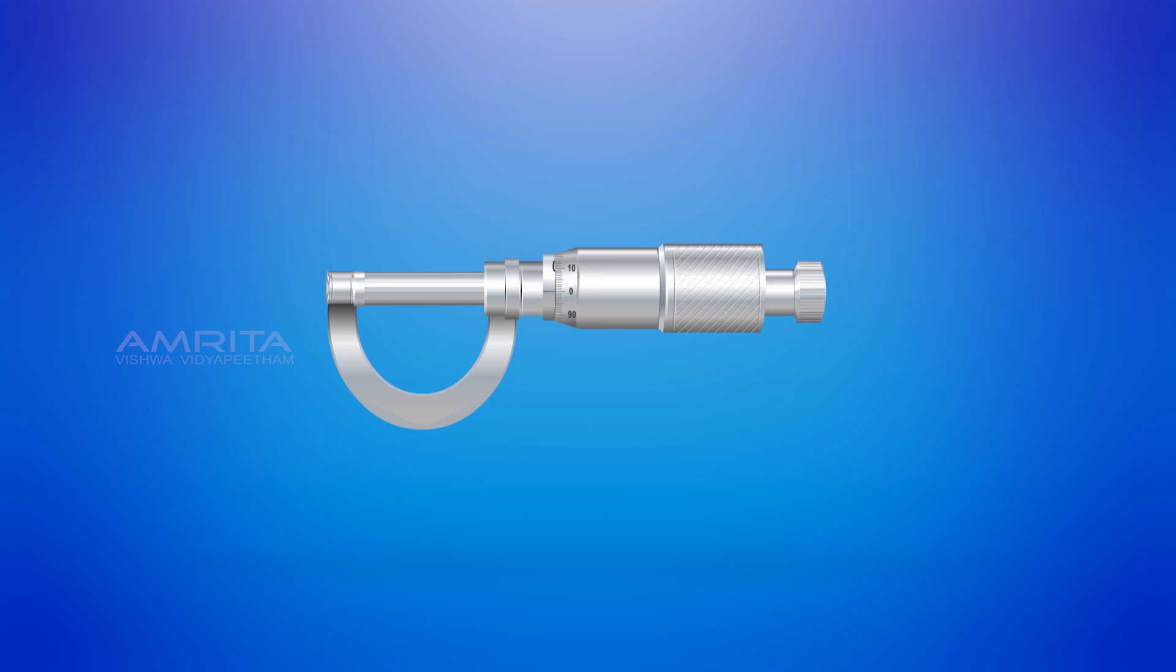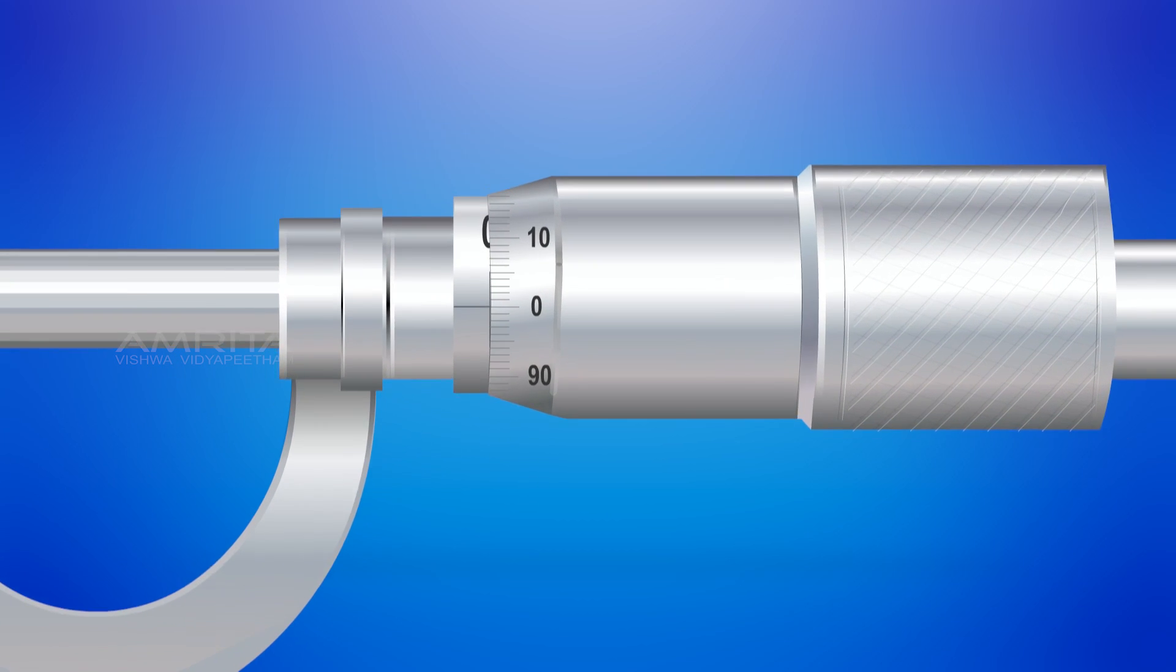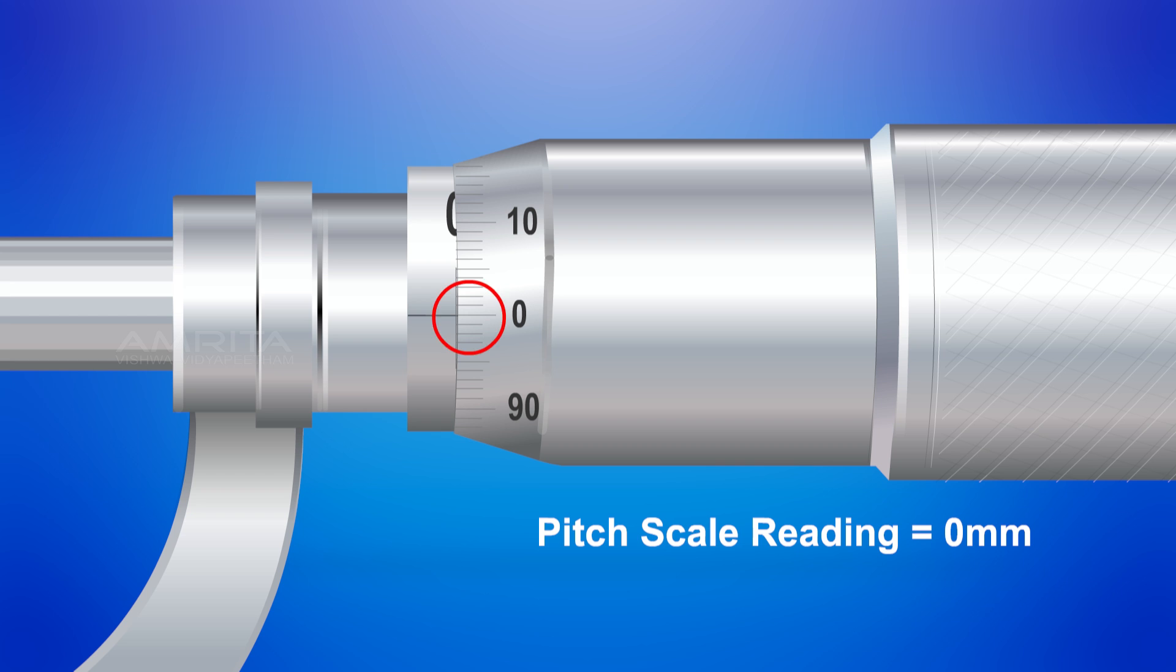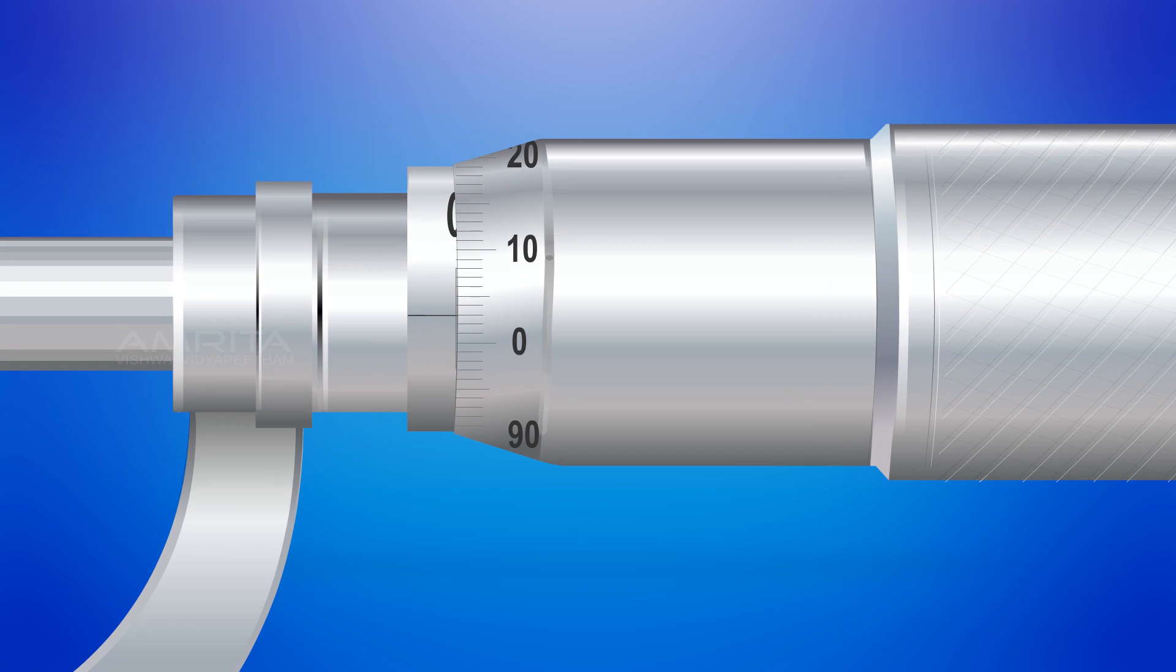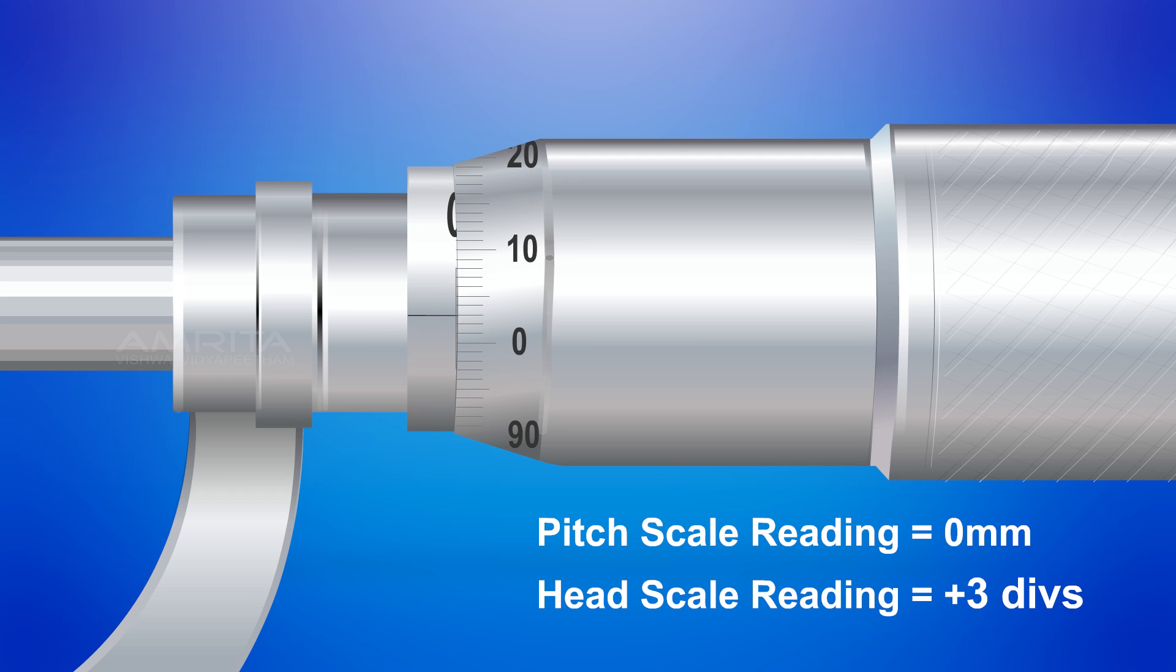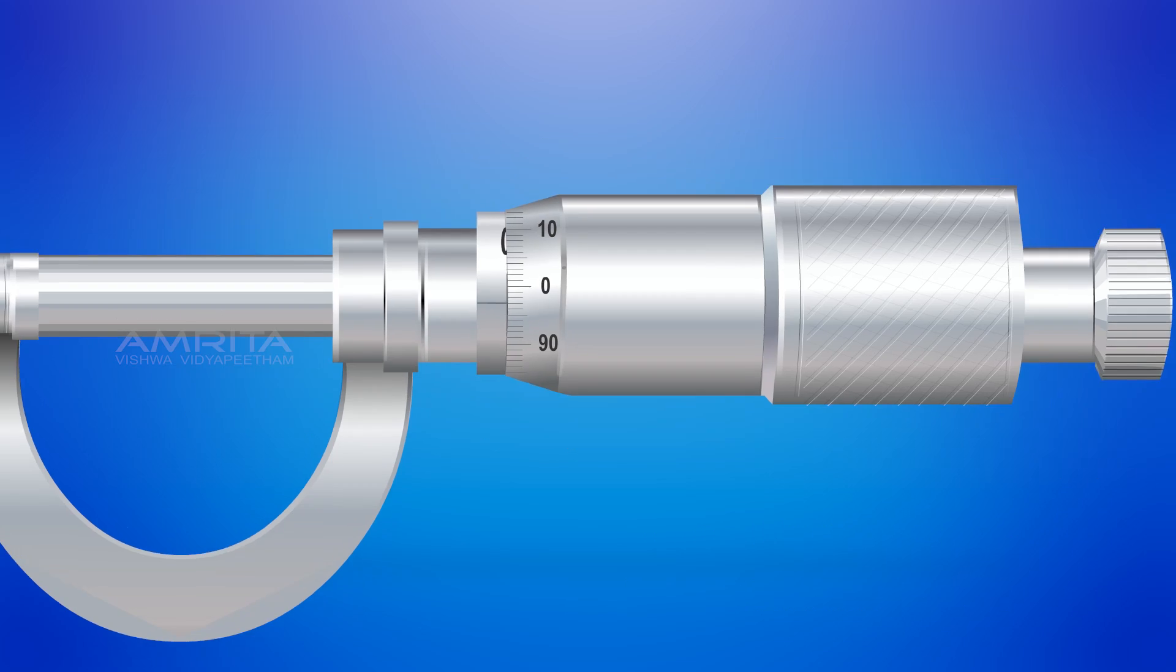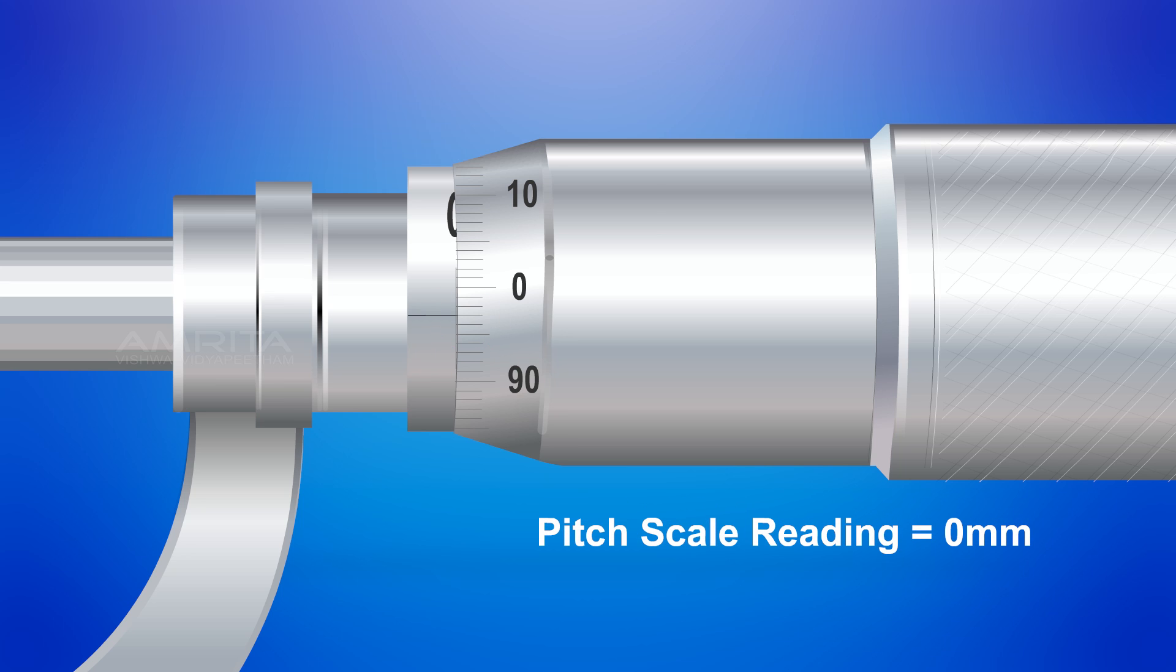Now, check for the zero error. Zero error is zero if the zero of the pitch scale coincides with the zero of the head scale. Error is positive if it coincides with the numbers above the zero of the head scale. Error is negative if it coincides with the number below the zero of the head scale.